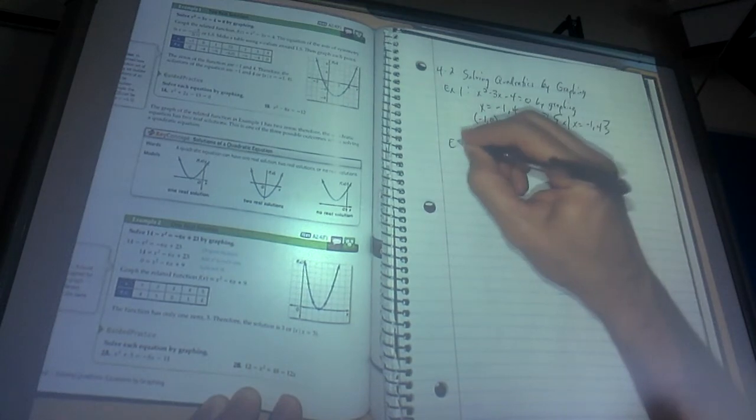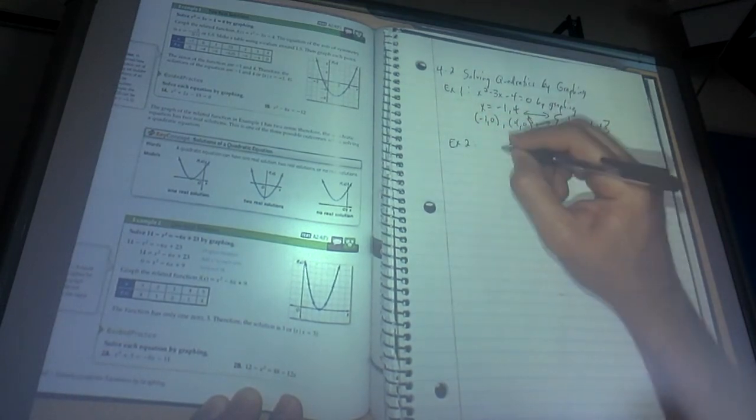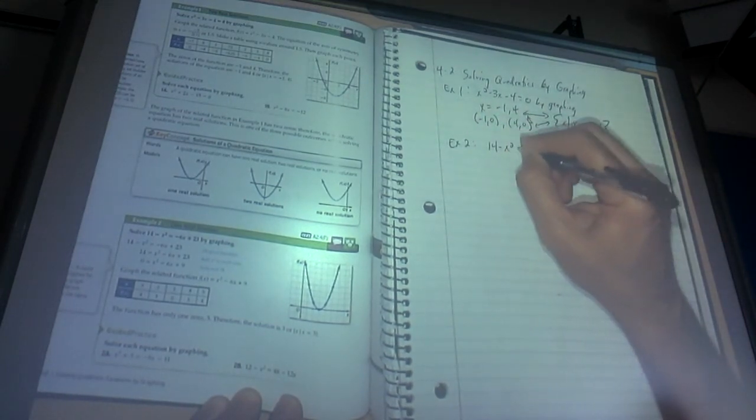one thing that I will do to make sure that we're good is it says 14 minus x squared equals negative 6x plus 23.